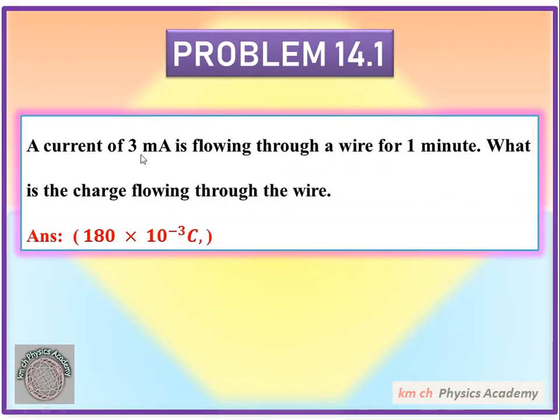A current of 3 mA is flowing through a wire for 1 minute. What is the charge flowing through the wire? We have to find the charge flowing through the wire.